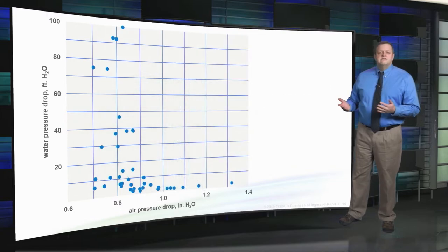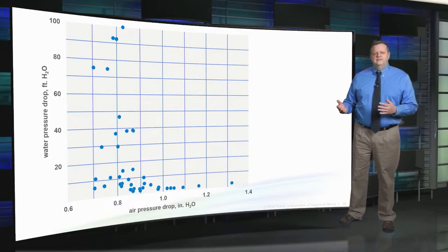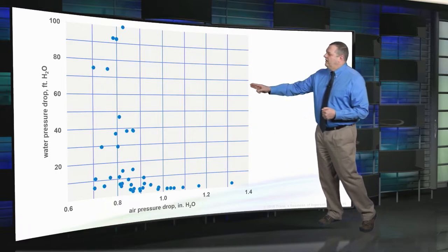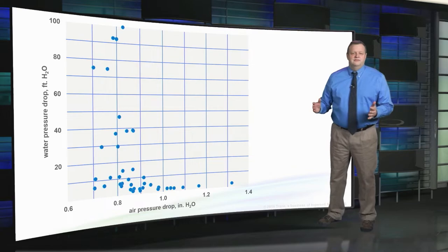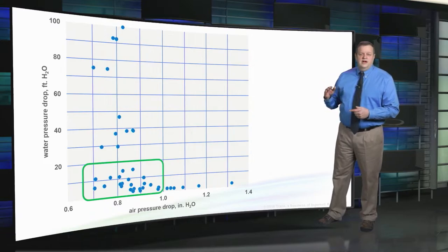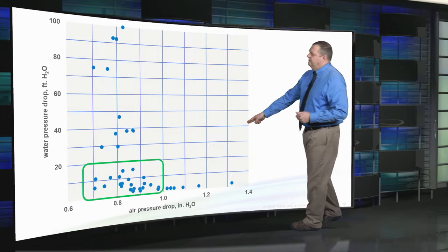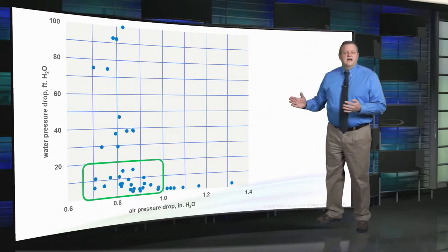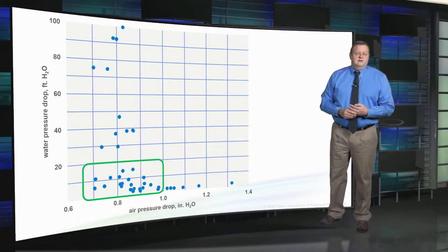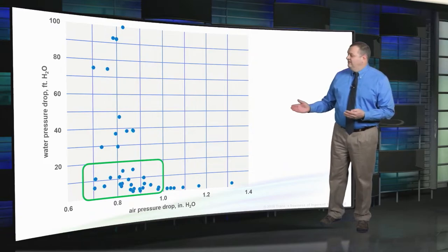To provide the required capacity, Trane's selection software gives 53 choices for this size air handler — different tube diameters, fin styles, circuiting options, etc. To simplify, let's remove the outliers. Plotting air pressure drop and water pressure drop for all 53 possible coils, we can eliminate those with the highest pressure drops and focus on choices in the lower range. For this application we have plenty of options. I'll also remove coils with 10 rows, since deeper coils can be harder to clean. And I'll remove those with water velocity lower than 2 feet per second at design conditions.